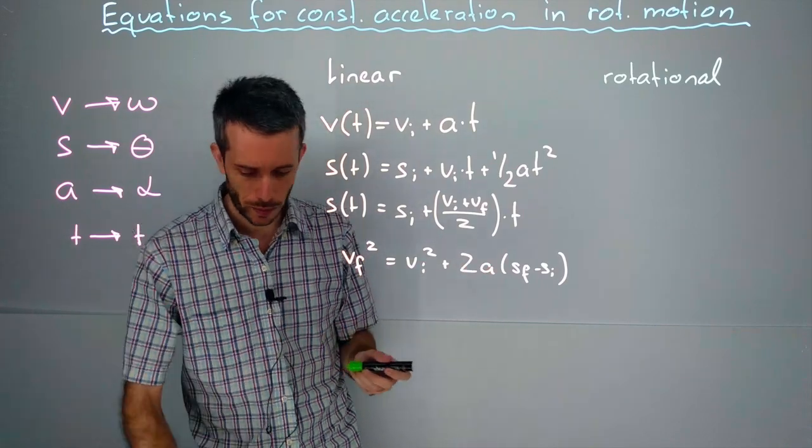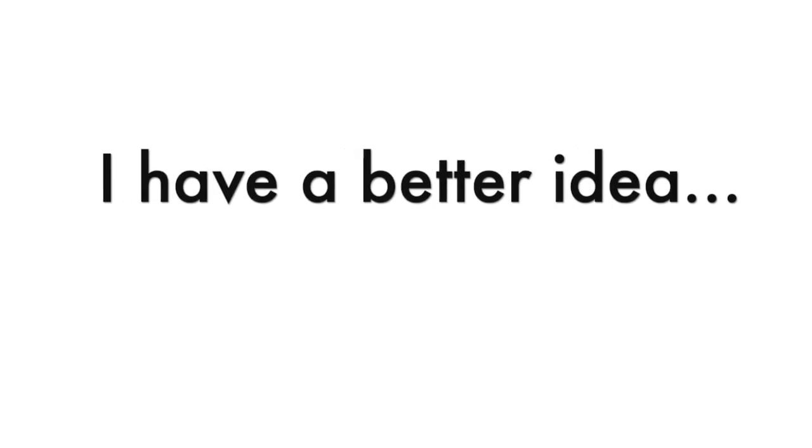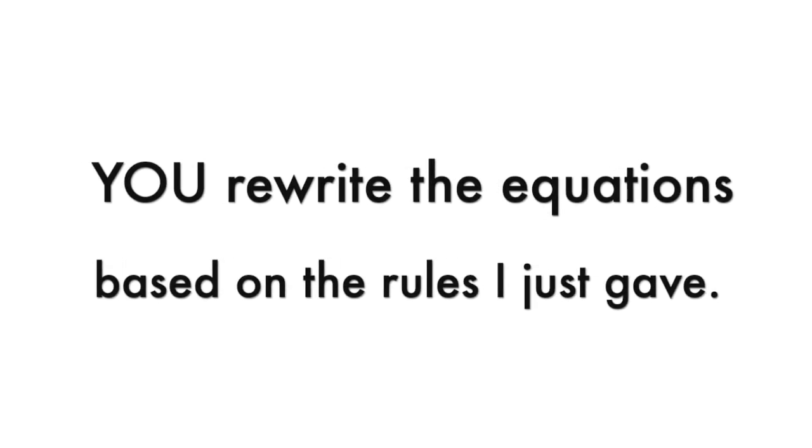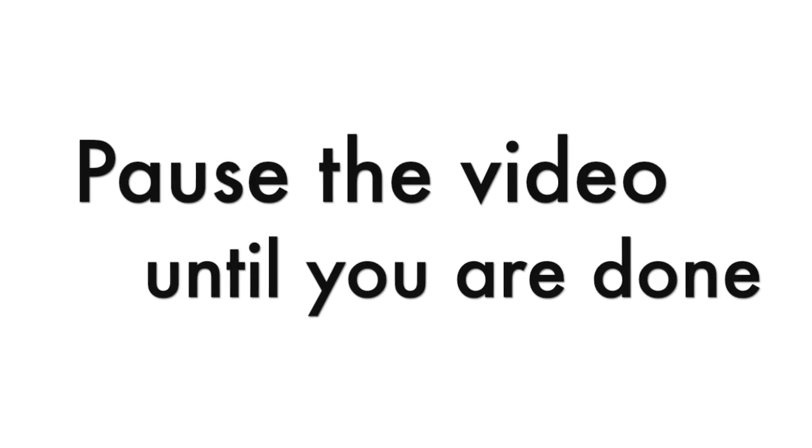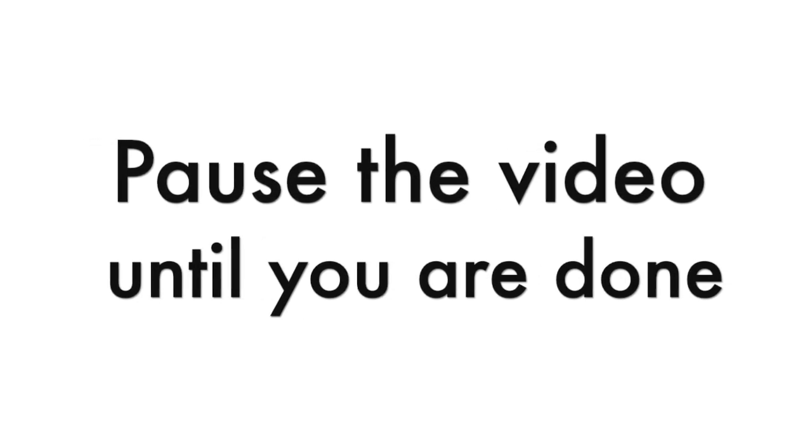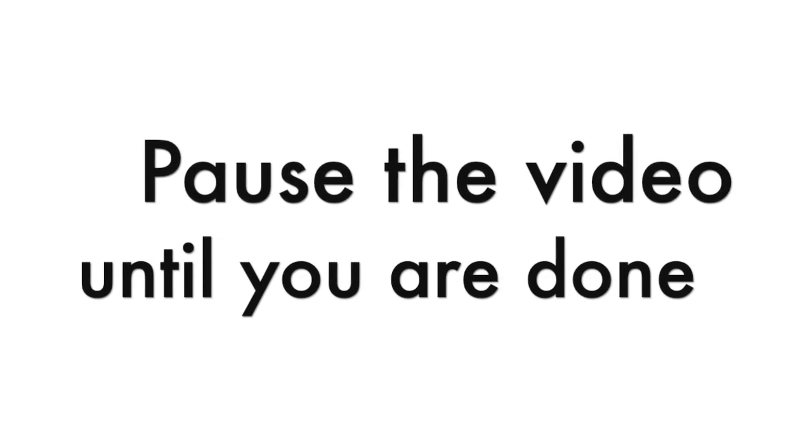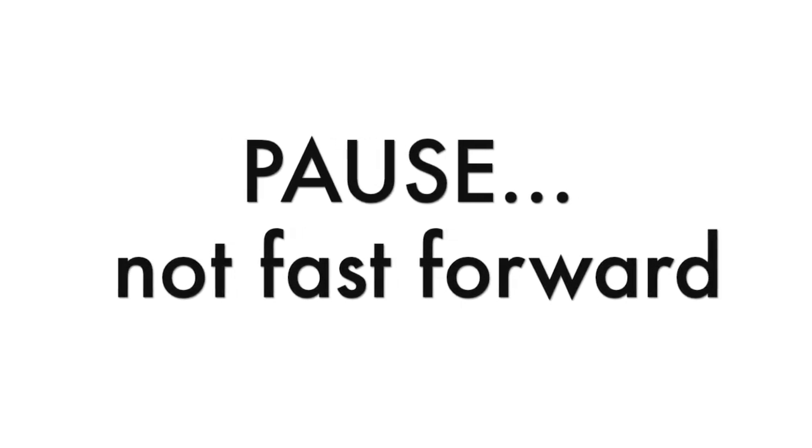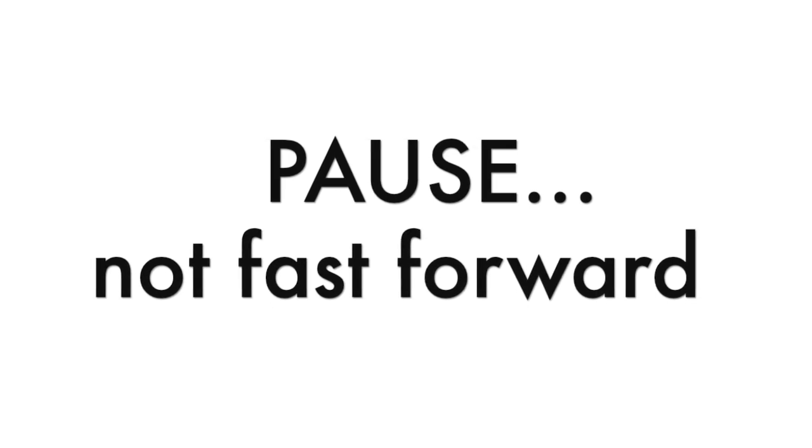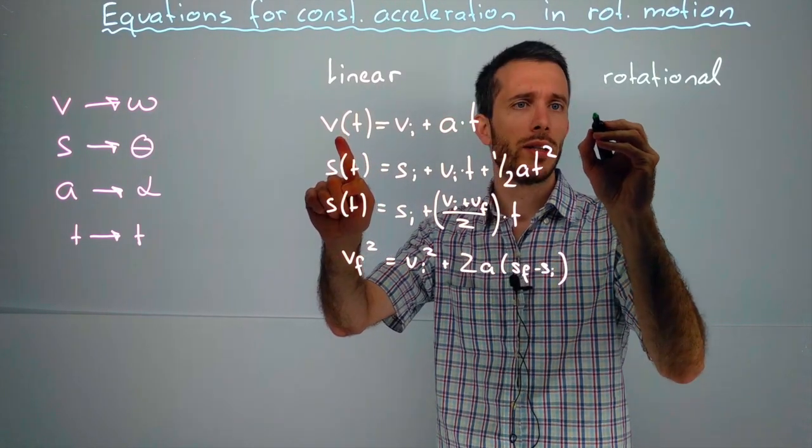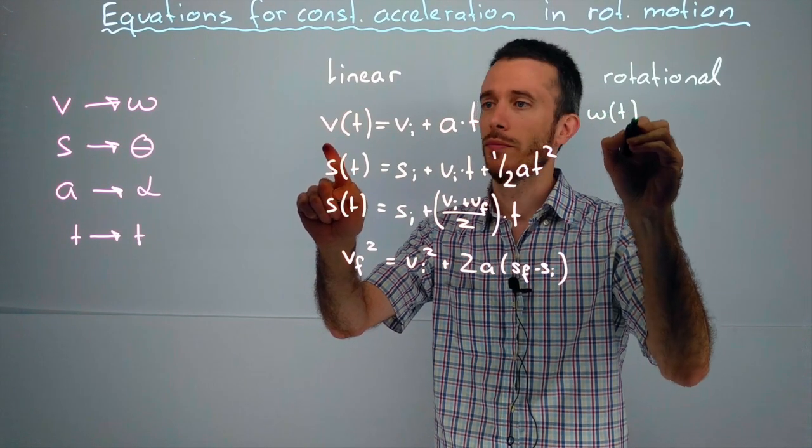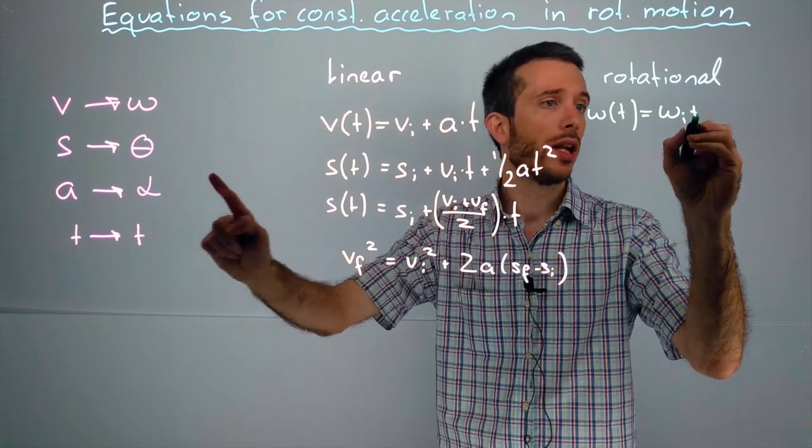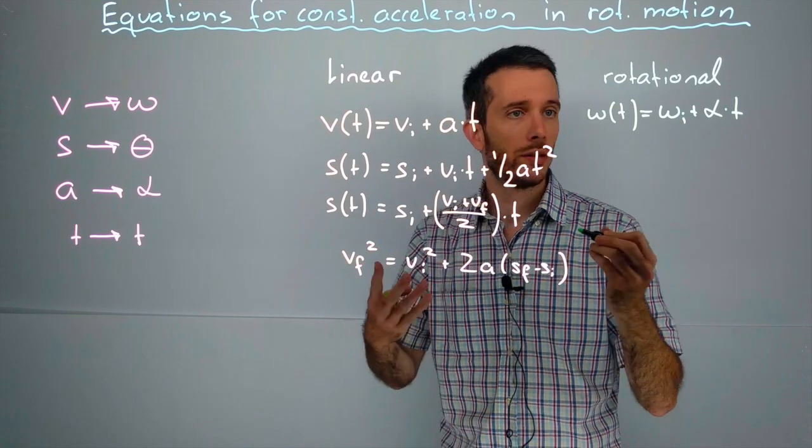Now let me rewrite those equations. First of all, we have a v, so we replace it by omega. So, omega as a function of time is equal to my omega initial plus a becomes an alpha, the rotational acceleration times time. That's it. First equation done.